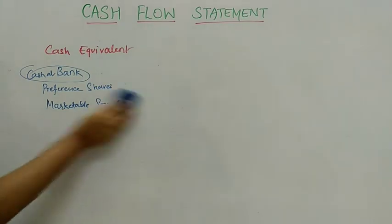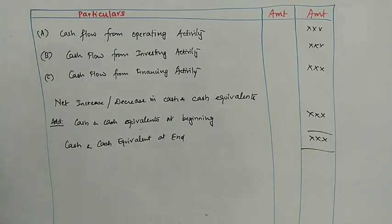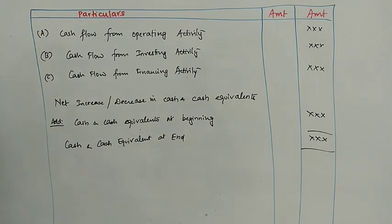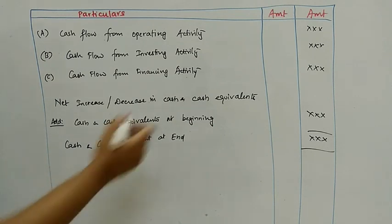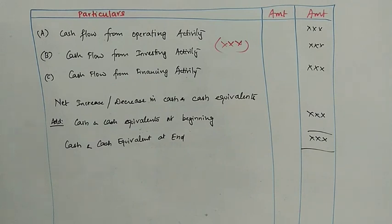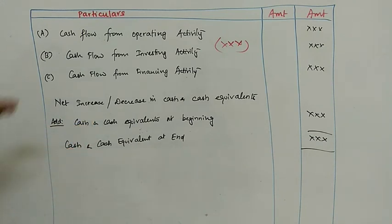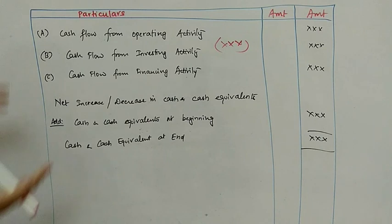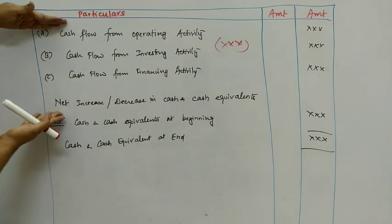This is the main format with main headings. First: cash flow from operating activity — that is the amount. Second: cash flow from investing activity. Third: financing activity. Each of these amounts can be positive or negative. Together they give the increase or decrease in cash and cash equivalents. If the total is positive, we have an increase; if negative, a decrease.